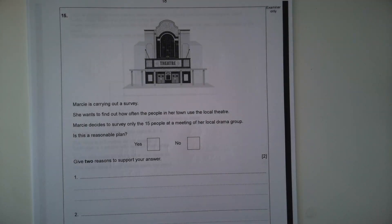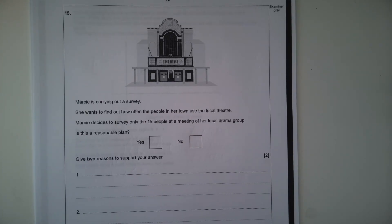Question 15. Marcie is carrying out a survey. She wants to find out how often the people in her town use the local theatre. Marcie decides to survey only the 15 people at a meeting of her local drama group. Is this a reasonable plan?